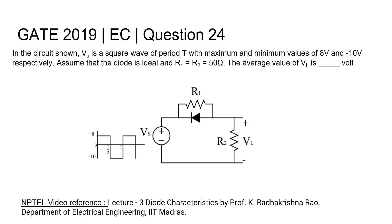Question 24, Electronics and Communication Engineering, Gate 2019. In the circuit shown, Vs is a square wave of period T with maximum and minimum values of 8V and minus 10V respectively. Assume that the diode is ideal and R1 and R2 are 50 ohm. The average value of VL is blank volt.